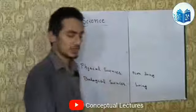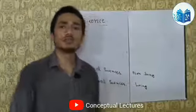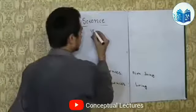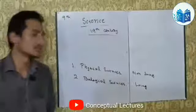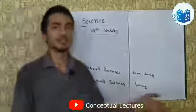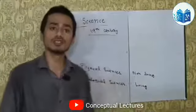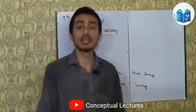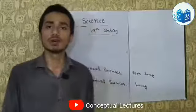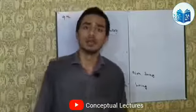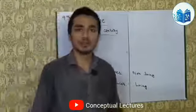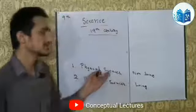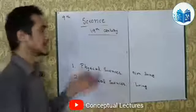After the 19th century, physical sciences were further subdivided. The universe contains many things - stars, planets, Mars, Jupiter. Everything in the universe needed to be categorized.